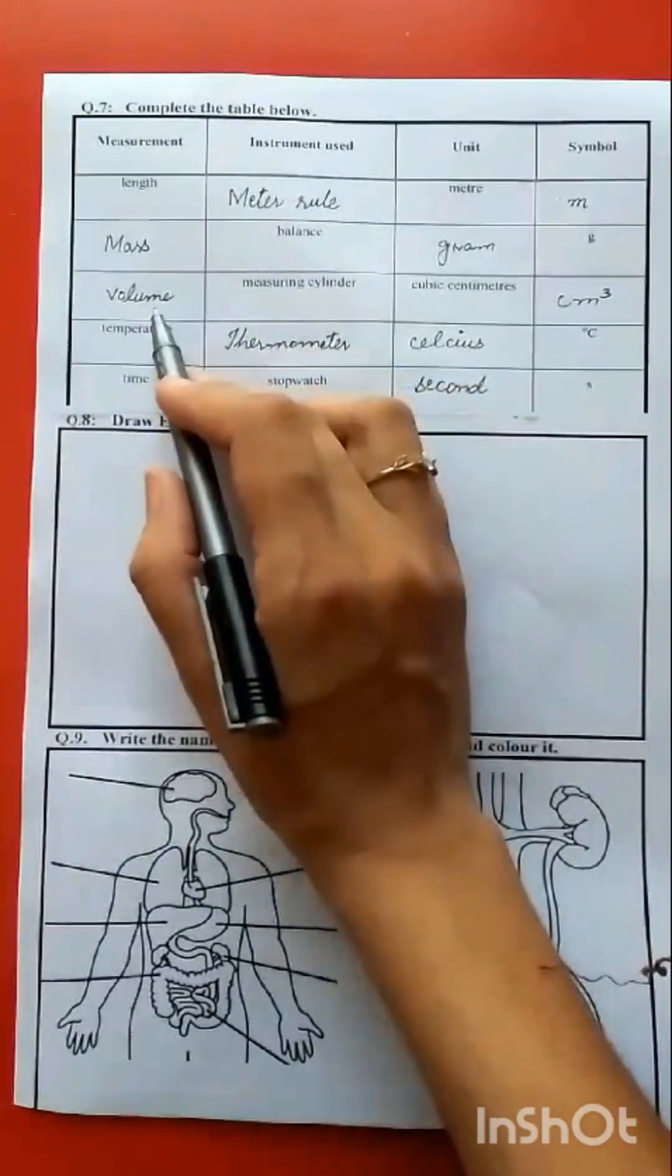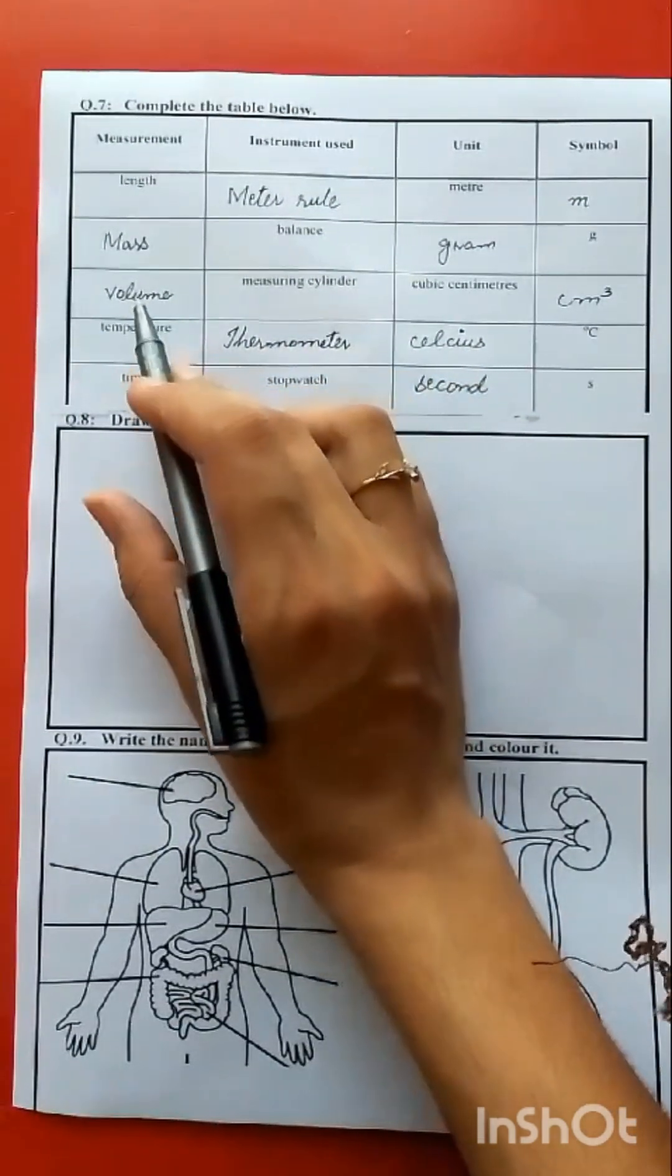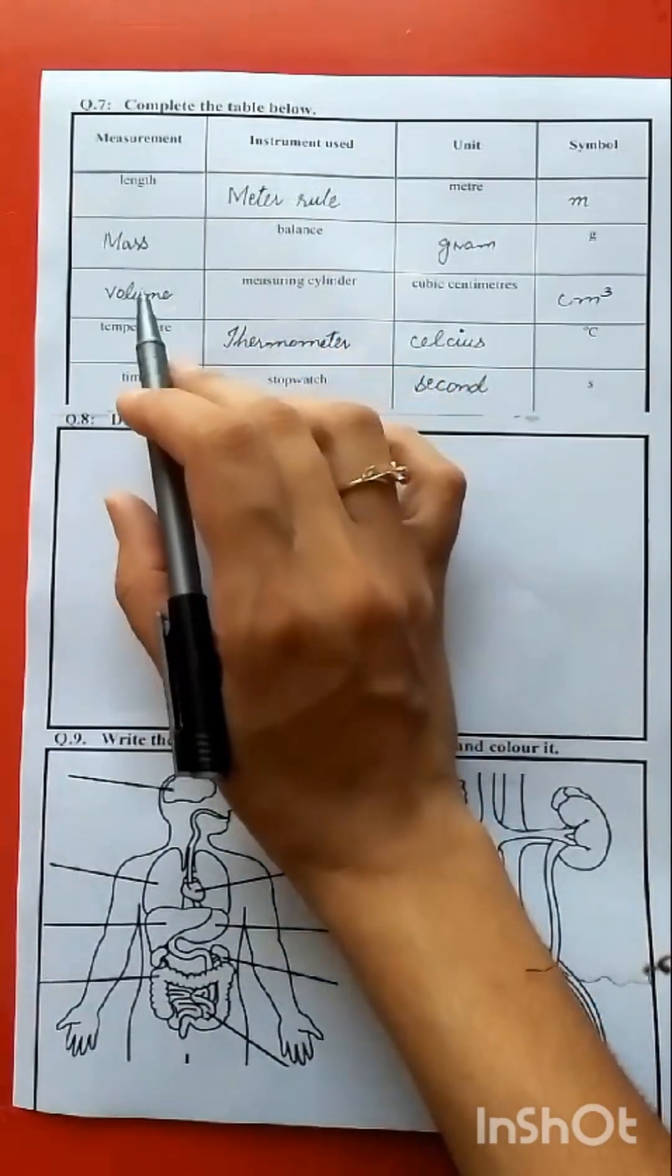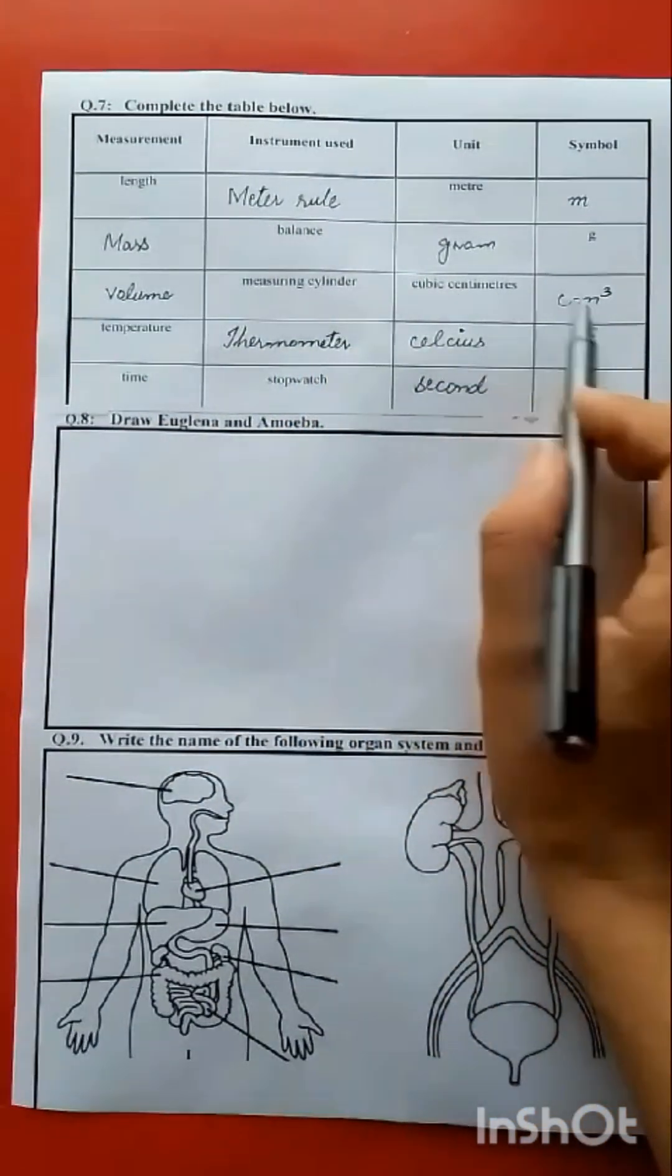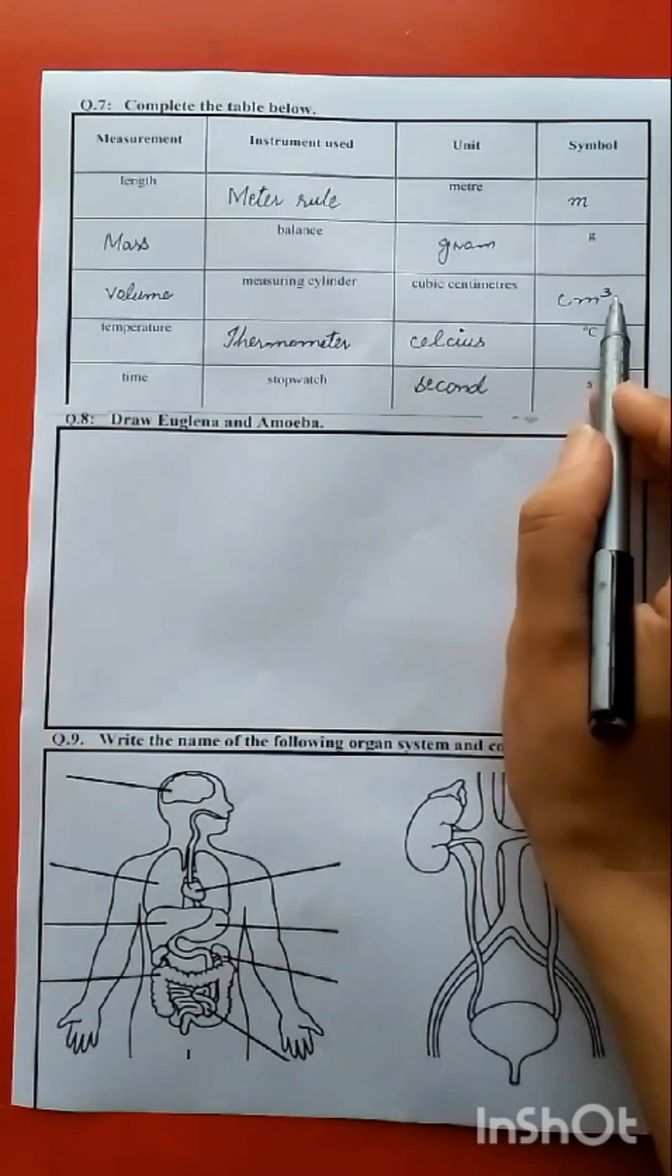Measuring cylinder for volume. Volume of liquid we can measure with measuring cylinder. The unit is cubic centimeter, cm.